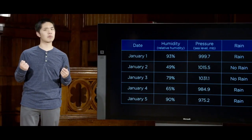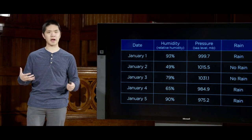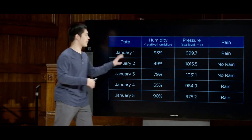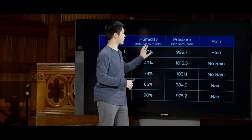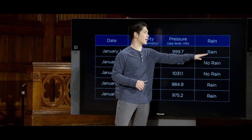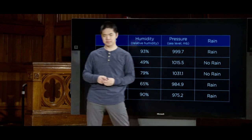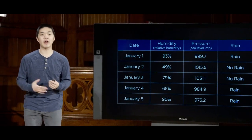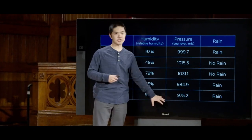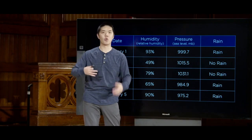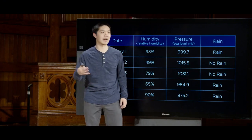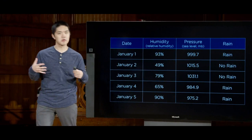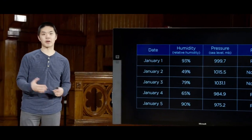What makes this a supervised learning exercise is that a human has gone in and labeled each of these data points — said that on this day, when these were the values for humidity and pressure, that day was a rainy day, and this day was a not rainy day. What we would like the computer to be able to do is, given these inputs — given the humidity and the pressure — predict what label should be associated with that day. Does that day look more like it's going to be a rainy day, or a not rainy day?